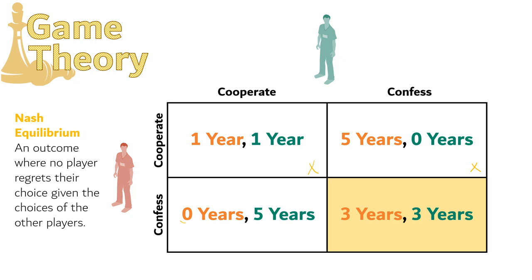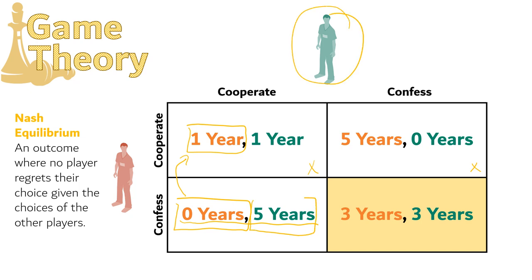That leaves this one here. Does any player regret their choice? For player A, they do not regret their choice — changing to cooperate would add a year of prison for them. But for player B, they're getting five years, and if they change their choice from cooperate to confess, they would get three years. So they would regret that choice, because they could have shaved two years off their prison sentence by confessing instead.